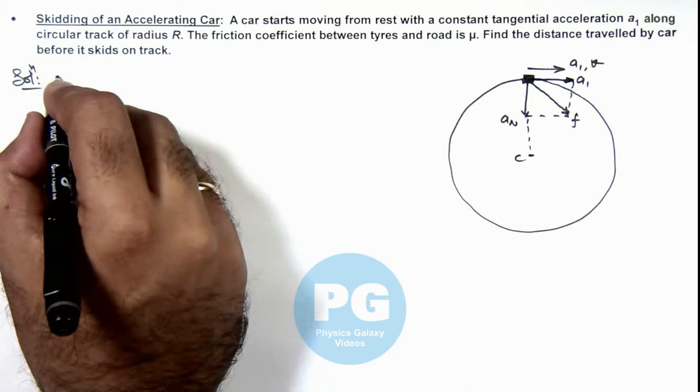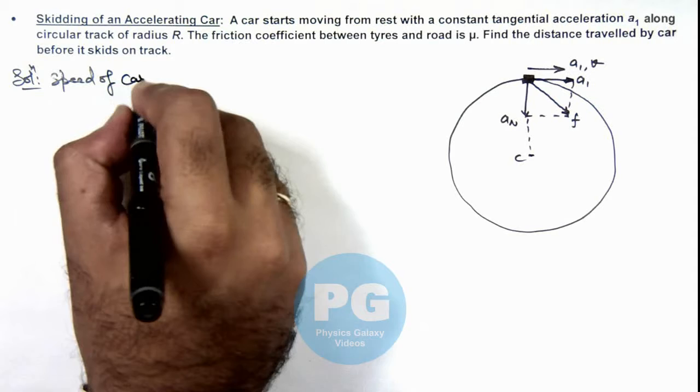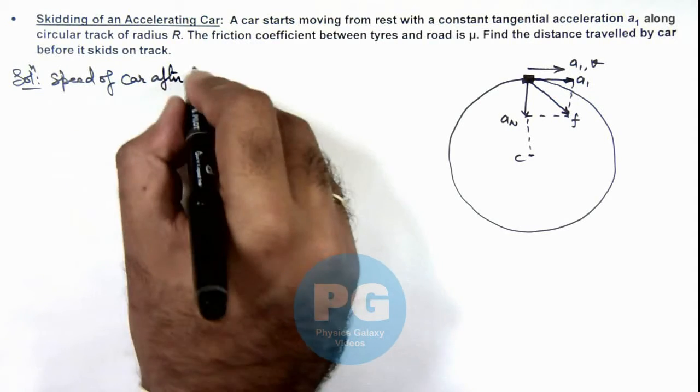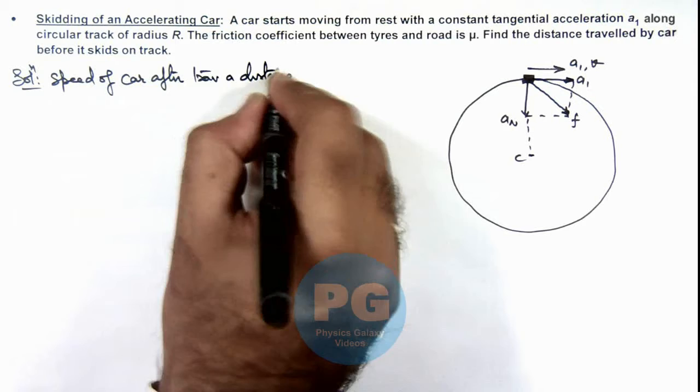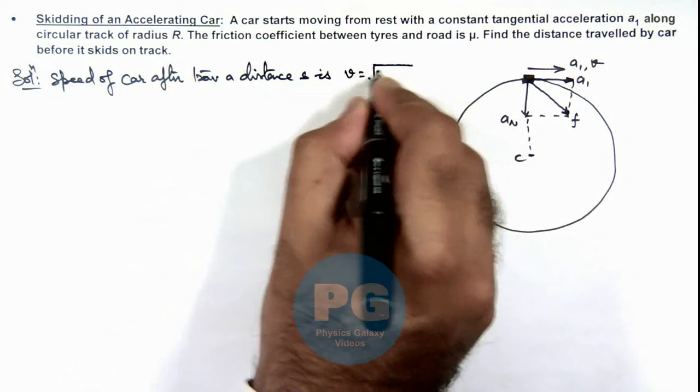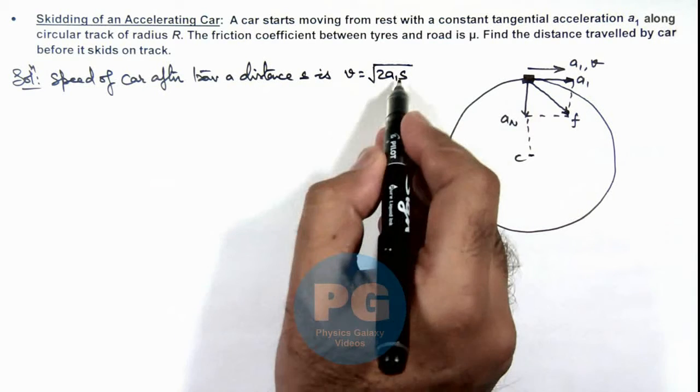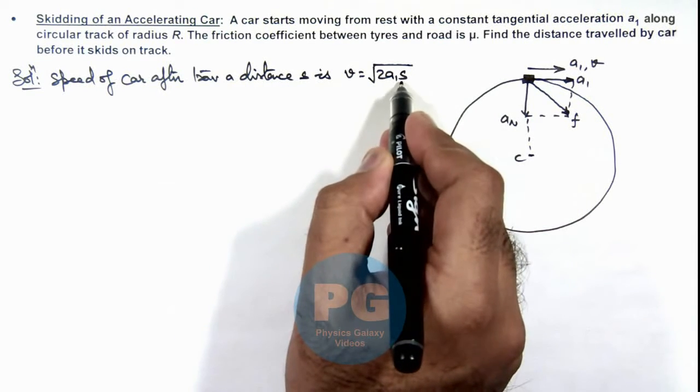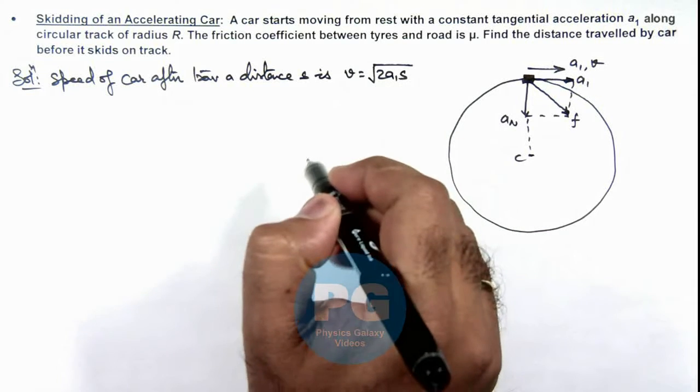Here we can write speed of car after traveling a distance s. This can be given as √(2a_t s) because a_t is a tangential acceleration, and if it has covered a distance s along the track, the speed can be given by √(2a_t s).